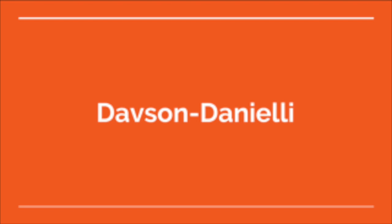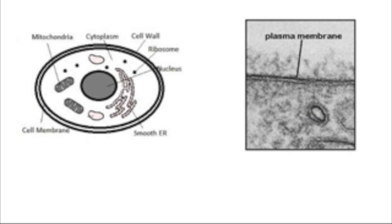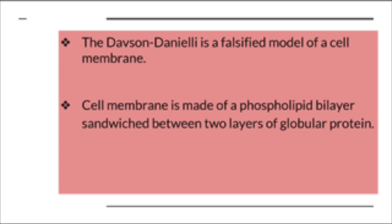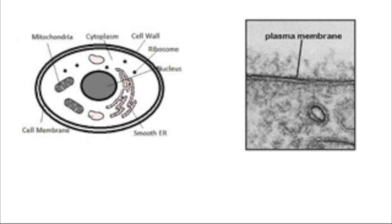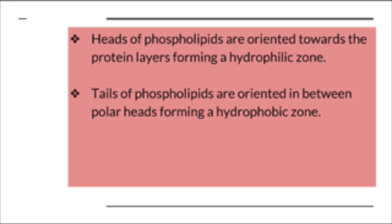The Davson-Danielli model is a falsified model of a cell membrane. According to the model, a cell membrane is made of a phospholipid bilayer sandwiched between two layers of globular protein. The polar hydrophilic heads of phospholipids are oriented towards the protein layers, forming a hydrophilic zone. Consequently, the non-polar hydrophobic tails of phospholipids are oriented in between the polar heads, forming a hydrophobic zone.